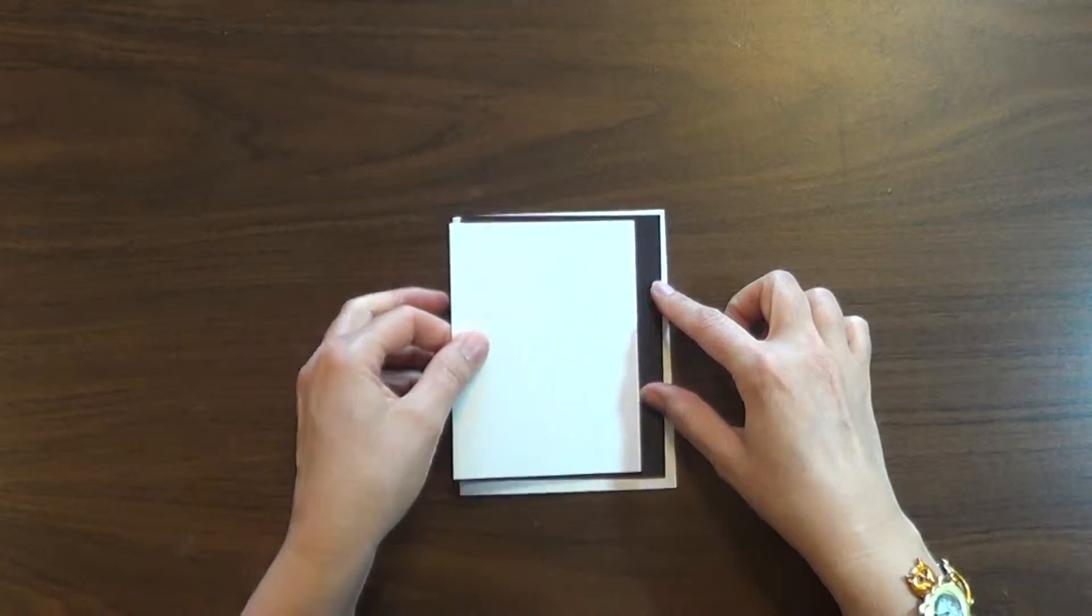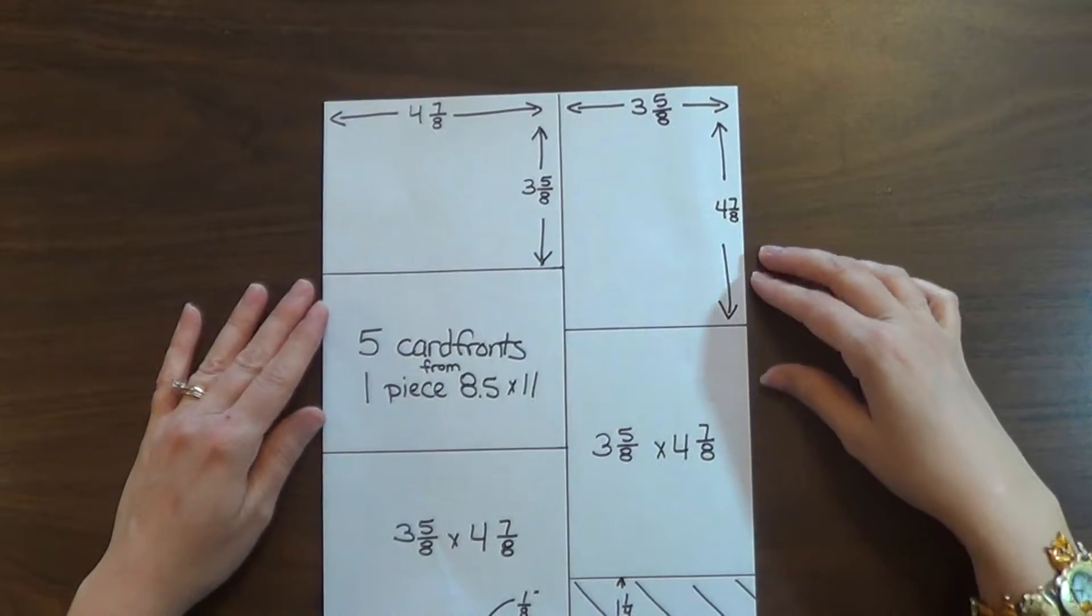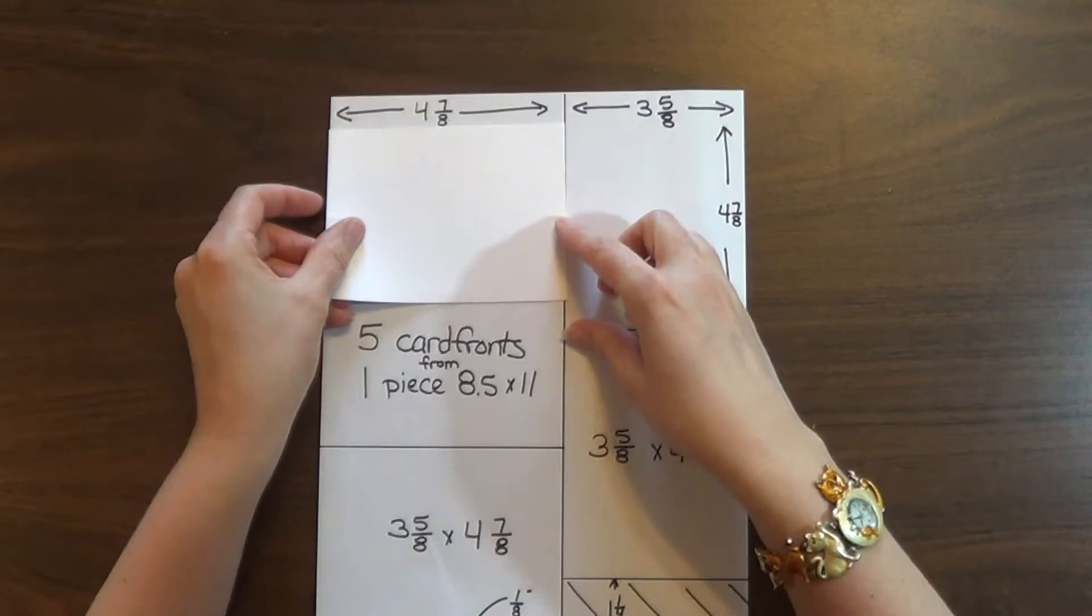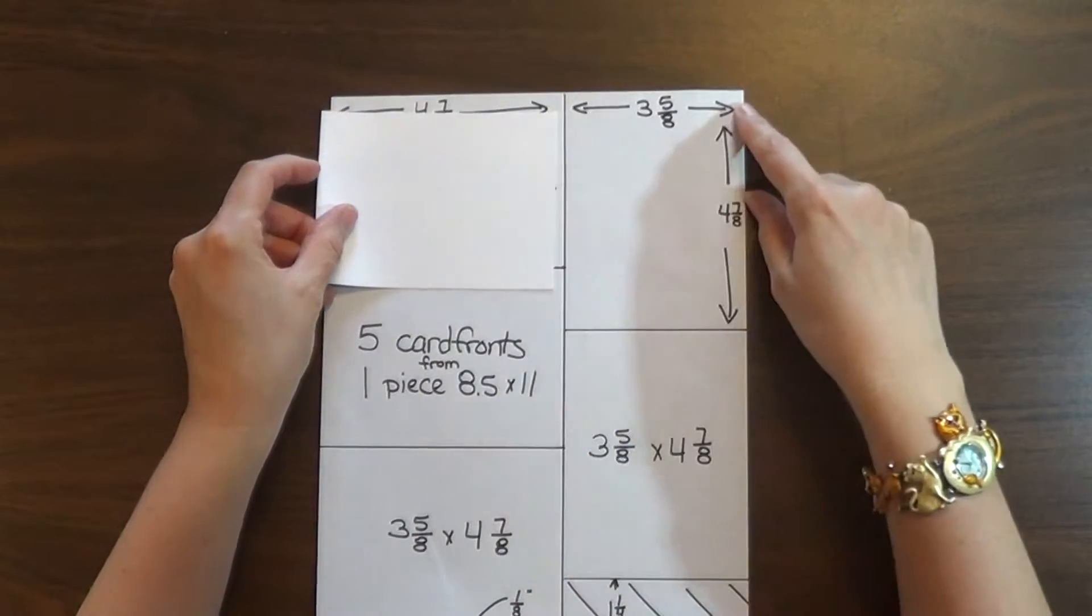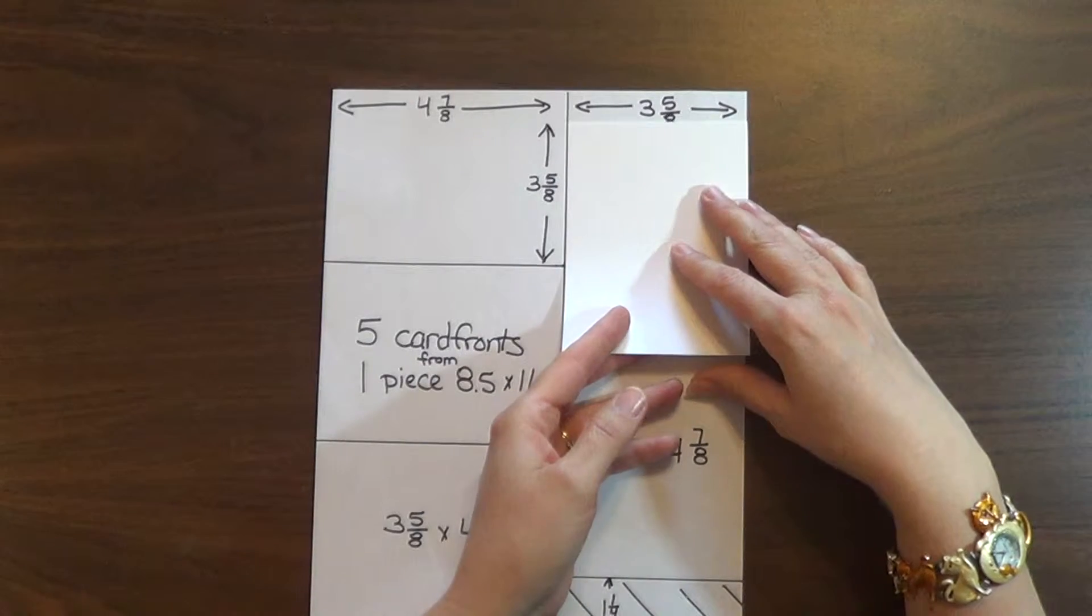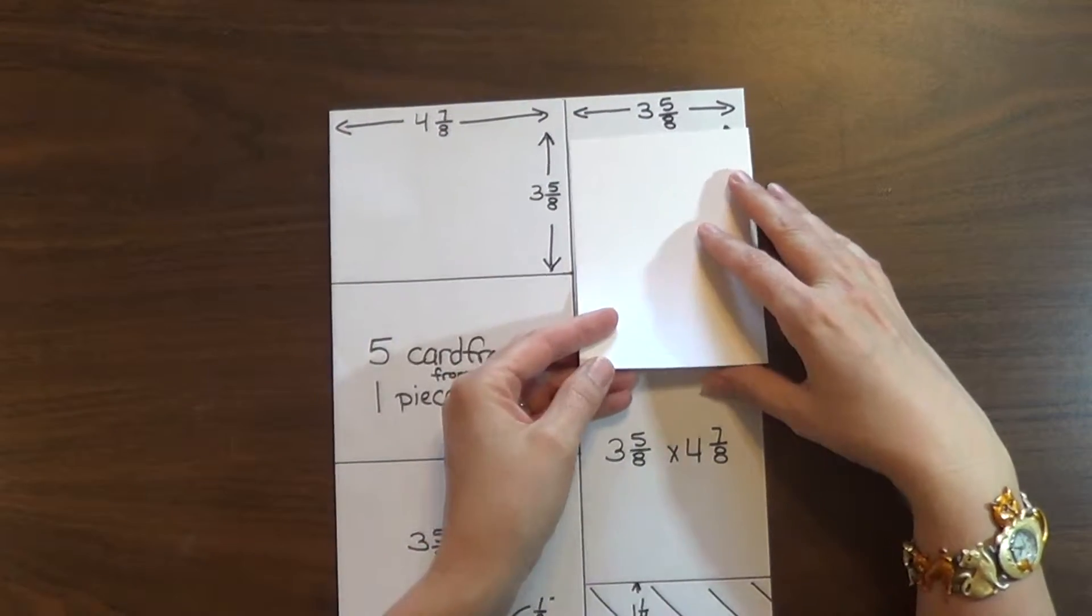So let me show you how to do that. If you cut your cardstock at four and seven-eighths, the other length of your eight and a half inch sheet will actually be the three and five-eighths. So you use the whole width of the cardstock when you do it this way.